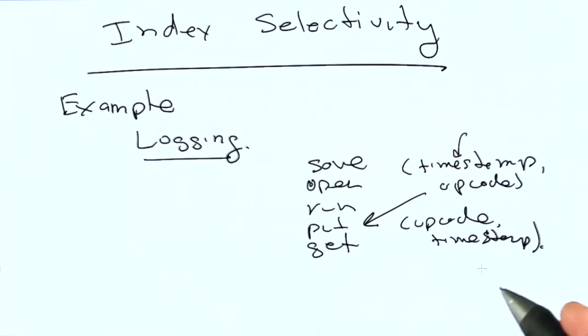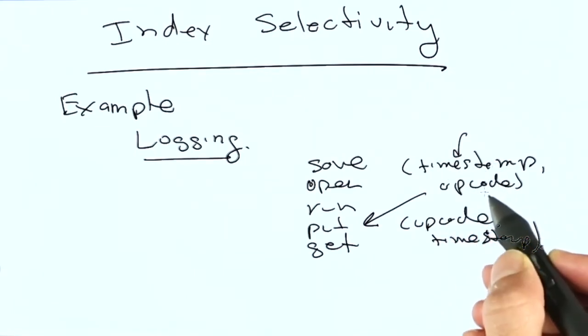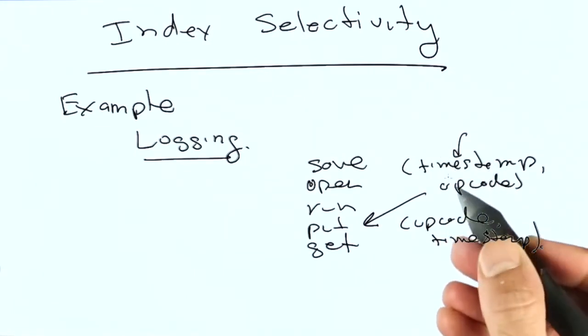And if you just had an index on opcode, for instance, it wouldn't be a lot different than doing a full collection scan. Whereas if there was an index on timestamp, comma opcode,